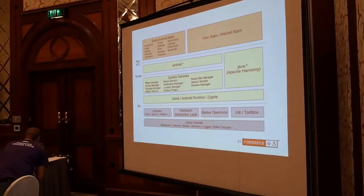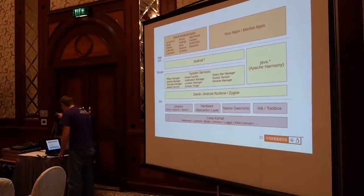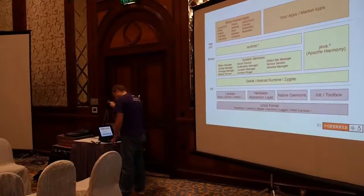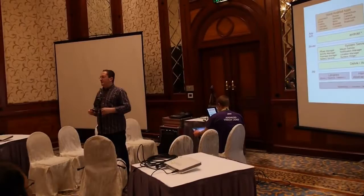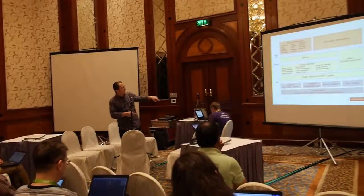They also have ASHMEM — anonymous shared memory. They're not using System 5 shared memory; they use their own custom shared memory mechanism. One key feature is that it can reclaim or shrink allocated regions if the system is under memory crunch. There's also a logger driver, an alarm driver, and so on. All of these things are crucial for the user space to run.